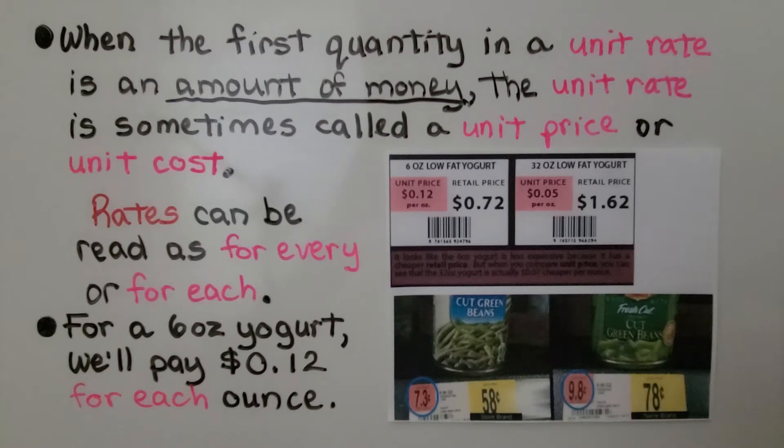When the first quantity in a unit rate is an amount of money, the unit rate is sometimes called a unit price or unit cost.